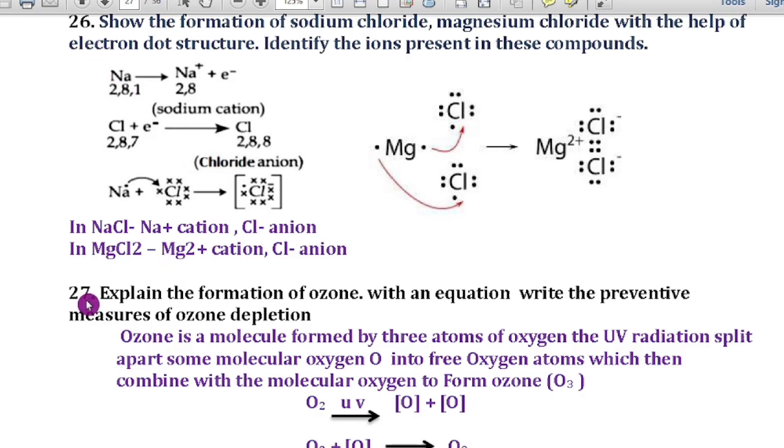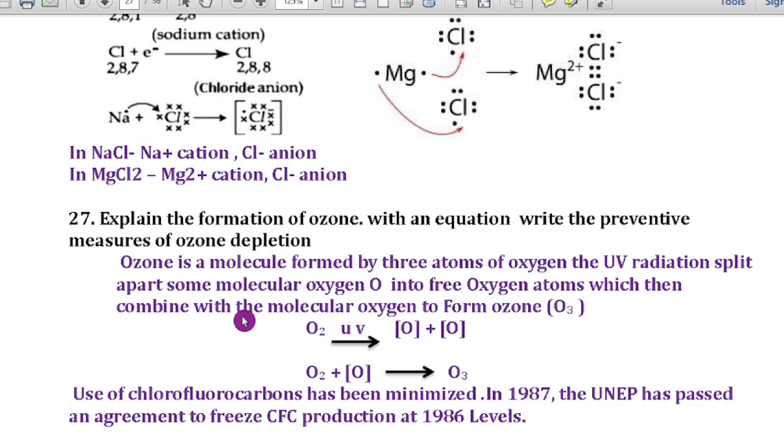Question number 27: Explain the formation of ozone with an equation. Write the preventive measures of ozone depletion. First we have to understand how the ozone layer is formed. Ozone is a molecule formed by three atoms of oxygen. The UV radiation splits apart some molecular oxygen O2 into free oxygen atoms, which then combine with the molecular oxygen to form ozone O3. O2 molecules through the UV radiation, it splits up into oxygen and oxygen. These oxygen combine with the oxygen molecule, then it forms ozone O3.